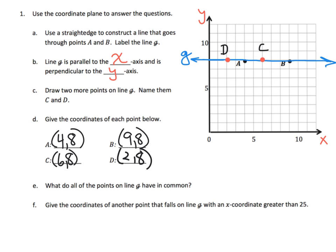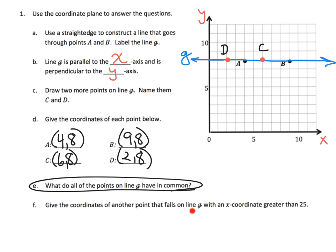What do we notice? They all have 8 as the y-coordinate. The question asks us to give the coordinates of another point on line G with an x-coordinate greater than 25. We know it could be anywhere along the x-coordinate, but it has to be at 8 on the y-coordinate — so it could be (100, 8), which would be perfectly fine.